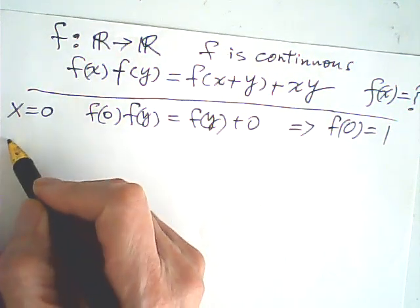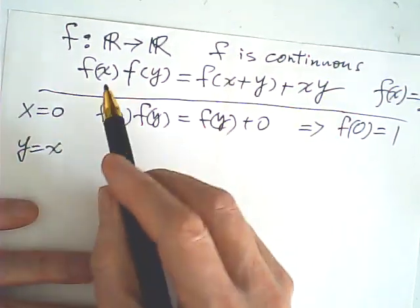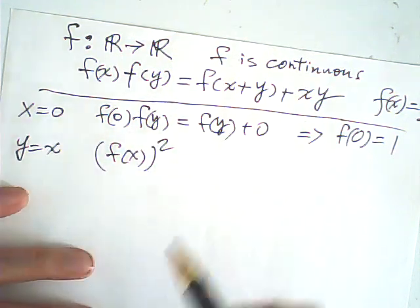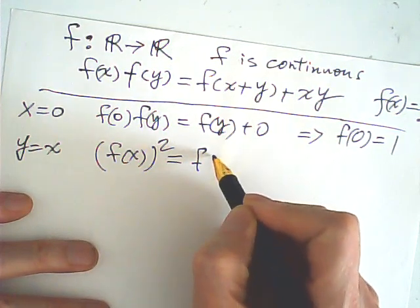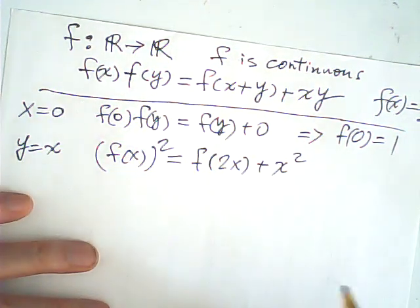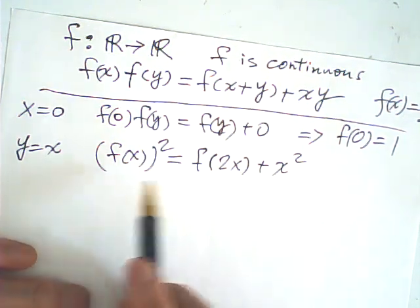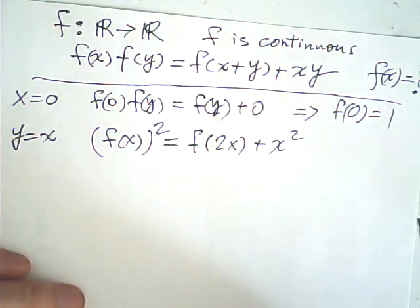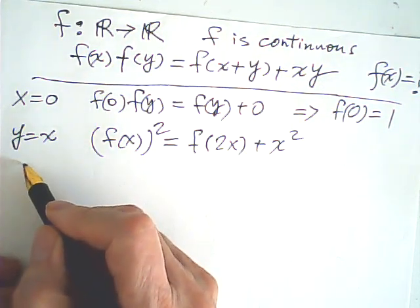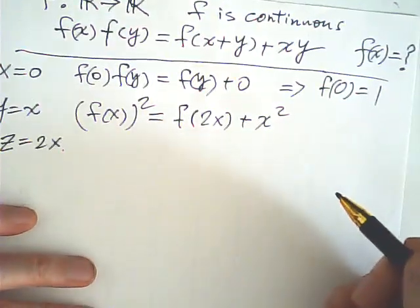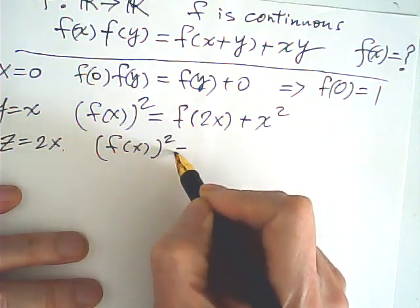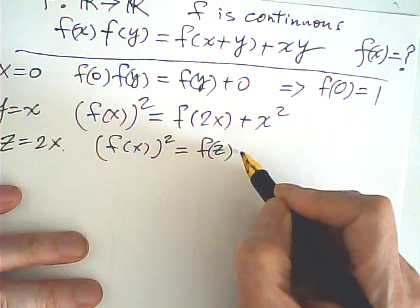Then, if y equals x, then this will be f(x) times f(x), so f(x) squared is equal to f of 2x plus x squared. This equation has only one variable, x. I'll let z be 2x, so this becomes: f(x) squared equals f(z) plus x squared.